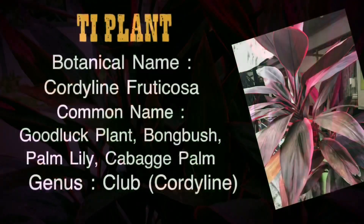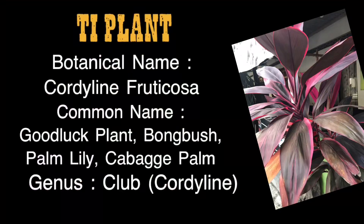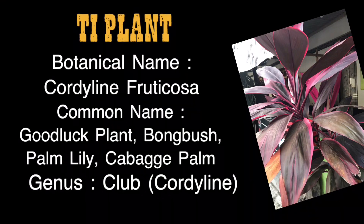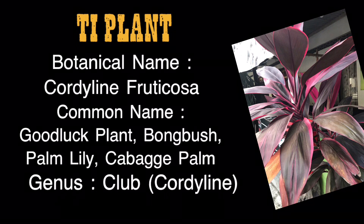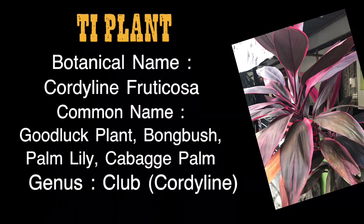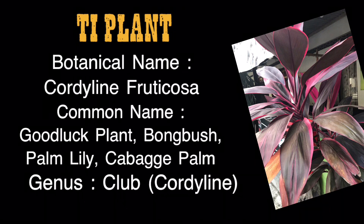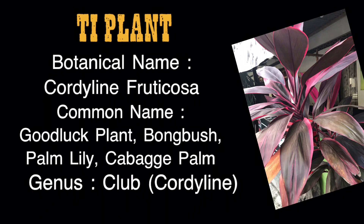This plant's name is the Ti plant. The botanical name is Cordyline fruticosa. The common names are: good luck plant, bongbush, palm lily, and cabbage palm. The genus is Cordyline.